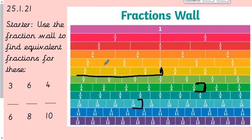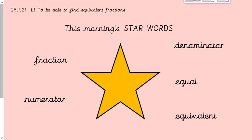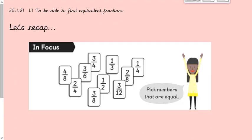We're going to carry on looking at equivalent fractions today. We have the same star words as last week: denominator — remember that's the bottom number, the D for down — numerator is the top number, and equivalent means they're the same or have the same value.